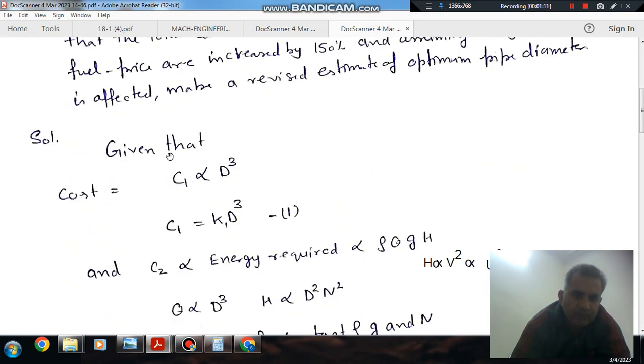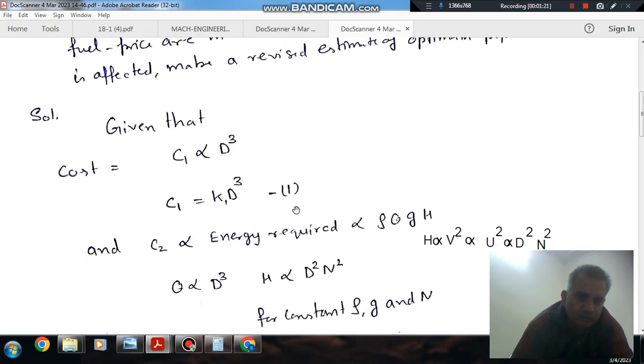So here, given that the cost C1 is directly proportional to D³, with constant of proportionality K1. So C1 equals K1 times D³. This is the equation for that.